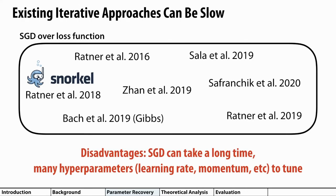Now let's talk about how we recovered the parameters of these graphical models. Previous approaches solve for the parameters by optimizing a loss function based on the rates of agreement and disagreement between labeling functions. Unfortunately, optimizing this loss function often requires iterations of stochastic gradient descent, which can take a long time and requires tuning many hyperparameters.